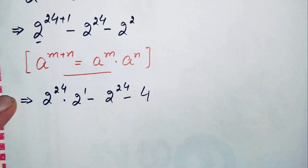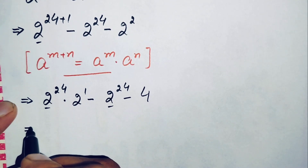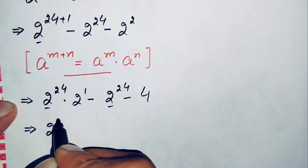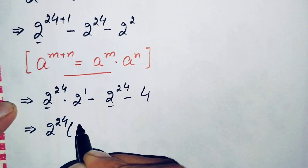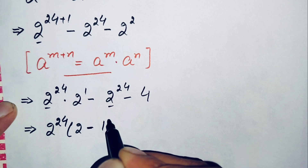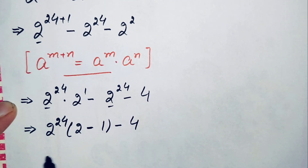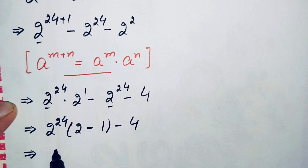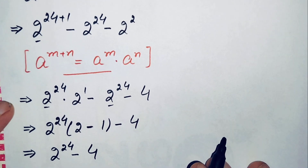From the first two terms we will take 2 raised to power 24 as a common factor. Taking 2 raised to power 24 common, this equation becomes 2 raised to power 24 times (2 minus 1), minus 4. Since 2 minus 1 is 1, this simplifies to 2 raised to power 24 minus 4.